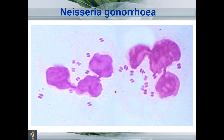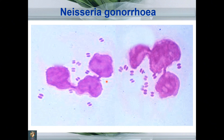Another slide shows Neisseria gonorrhoeae. The most important feature is that it is gram negative — you can appreciate the pink color as compared to Staphylococcus aureus. Note the arrangement: these are gram-negative diplococci — not in clusters, not in chains, but in pairs. If you place two coffee beans alongside each other, you get this image, which is typical for Neisseria gonorrhoeae.